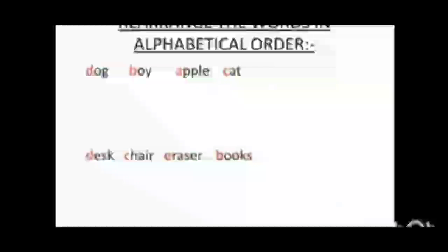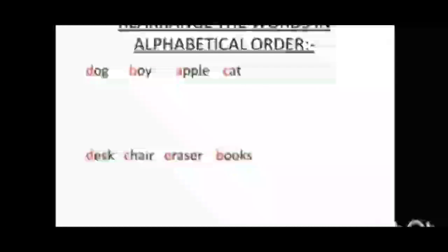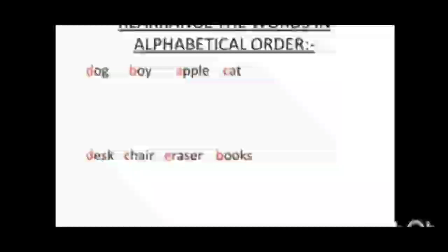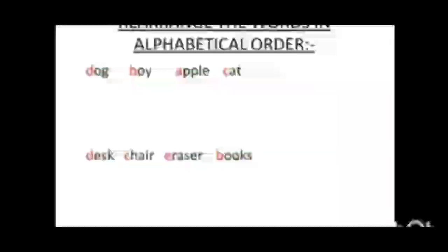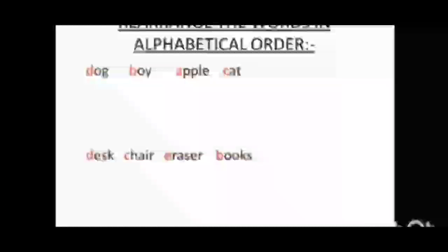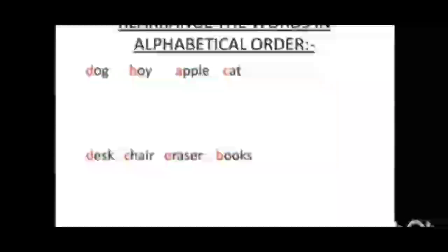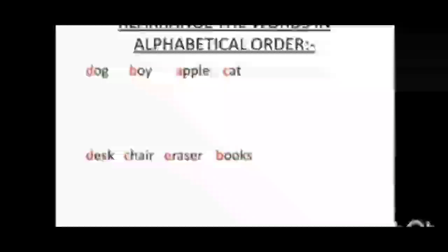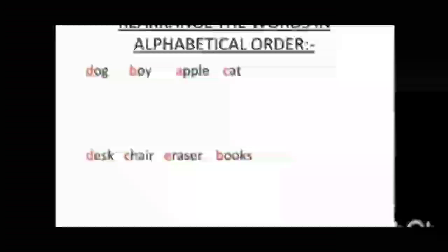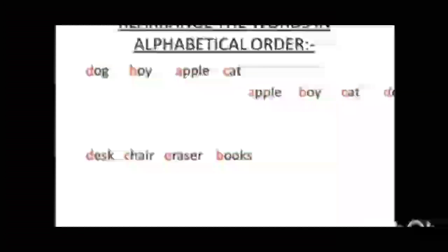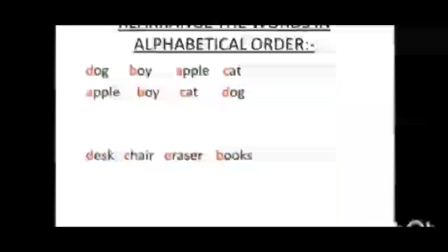Now rearrange this list of words in alphabetical order. The words are dog, boy, apple, cat. To arrange this list in alphabetical order, we look at the first letter of each word. The word which begins with letter A comes first, followed by the word which begins with letter B, then C, and then D. This list in alphabetical order will be: apple, boy, cat, dog.